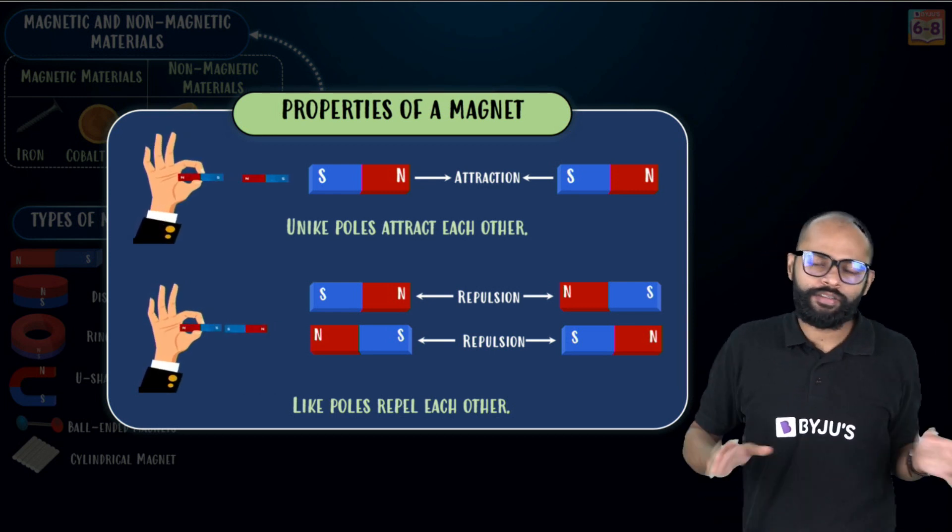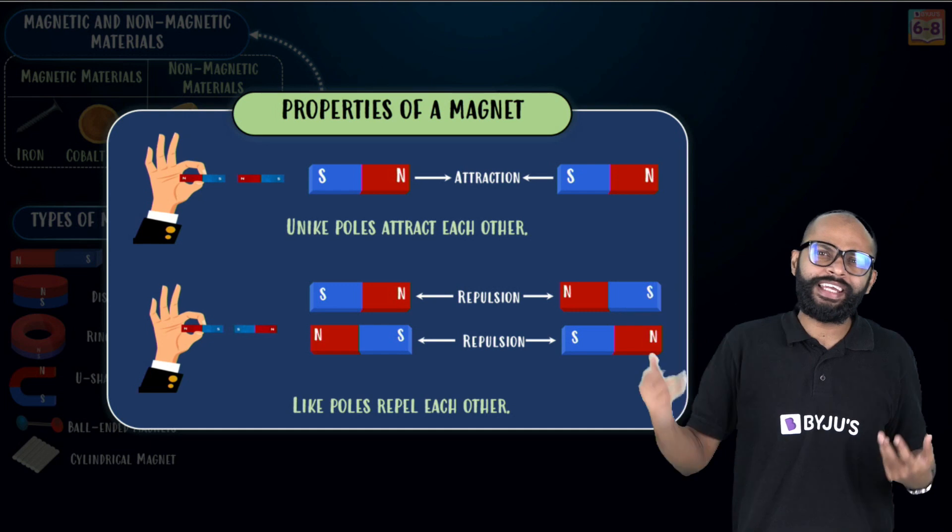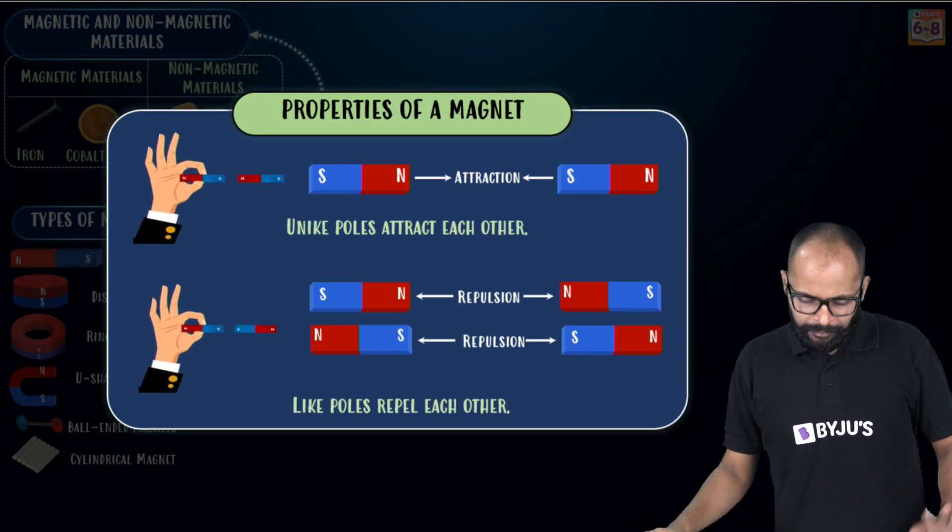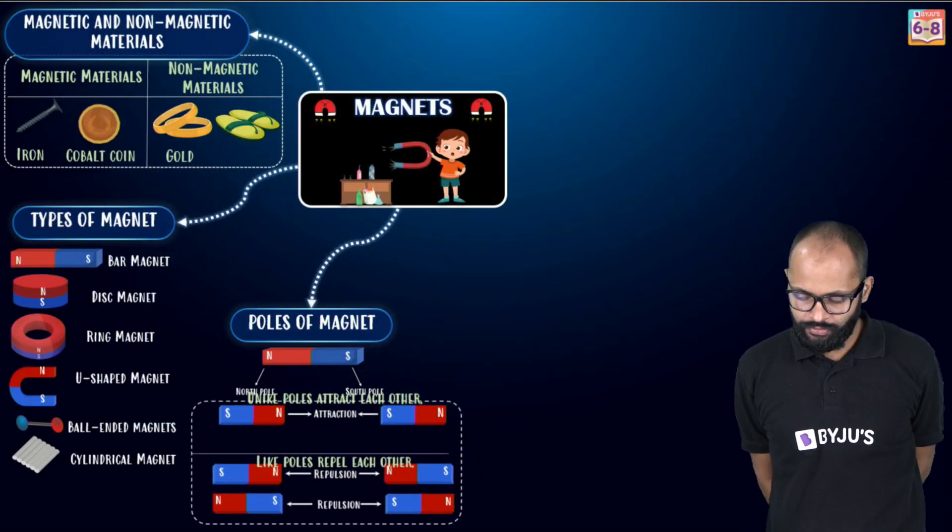Unlike poles, they attract. Unlike poles, they like each other, right? So how do we remember it? Like poles don't like each other. Unlike poles like each other. And we should say, okay? Alright. So this is the properties of a magnet. Very good.